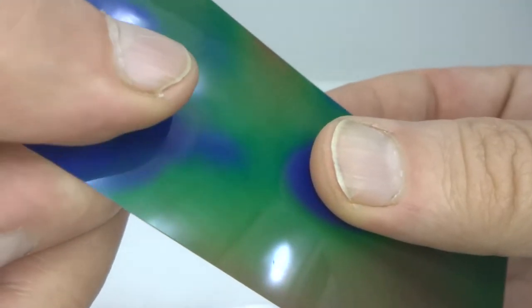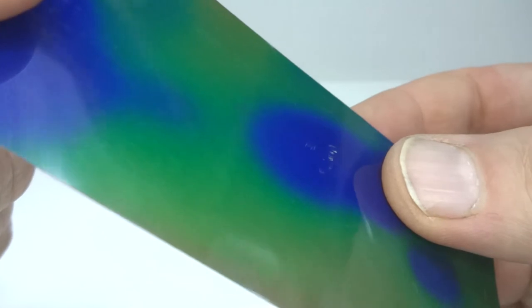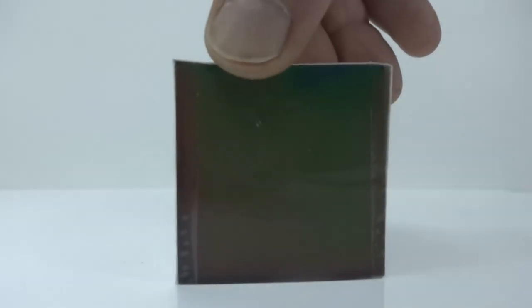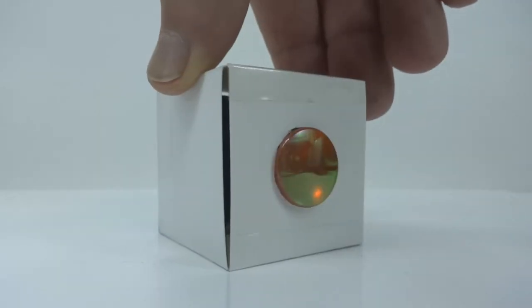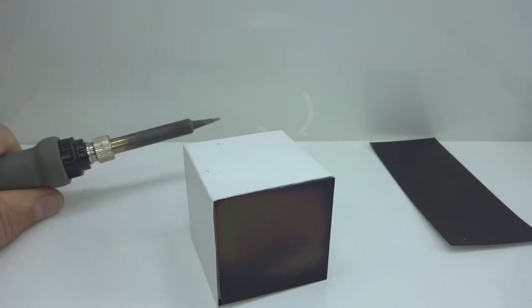Taking this principle further, I have some thermochromatic LCD film here, with a colour transition temperature of about 25 to 28 degrees celsius. I've made another crude thermal camera, this time in a more portable style.